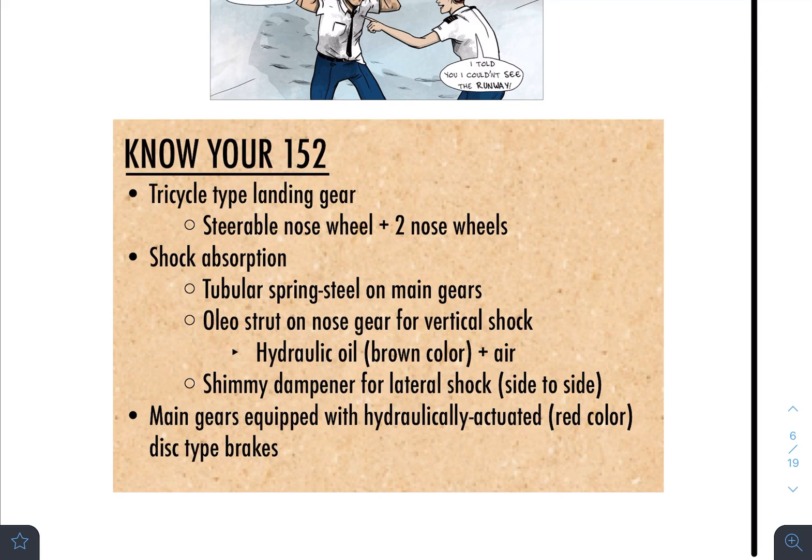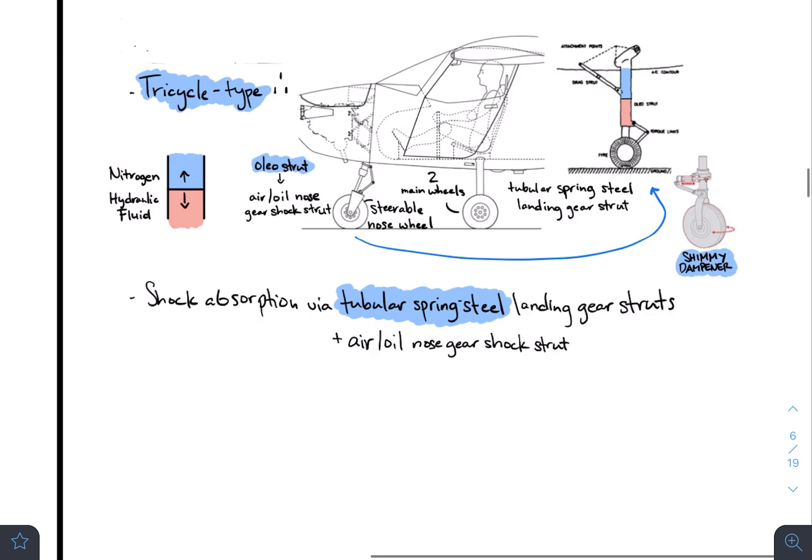Now, the shimmy dampener is for lateral shock. So, you can see there's a difference. Vertical and lateral shock. And they're both going to be on the nose gear. Just so happens that the main difference is that the oleo strut has up and down shock absorption. However, the shimmy dampener has left and right shock absorption.